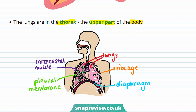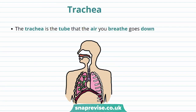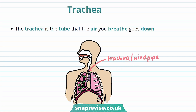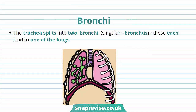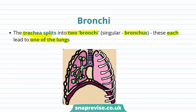Part of your thorax is your trachea, also known as the windpipe. The trachea is a tube that the air you breathe goes down into the lungs. The lungs also have structures called bronchi — this is where the trachea splits into two. The singular of bronchi is bronchus, and each of these leads to one of the lungs.